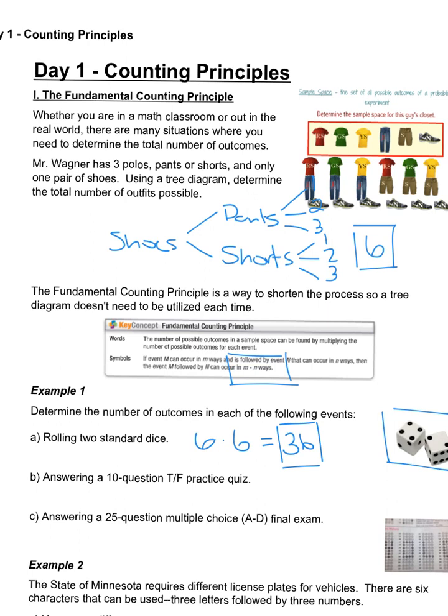All right, if I have a ten-question true-false quiz, I have true or false on the first, which is two options. Two options on the second, true or false. Two options on the third. Two options on the tenth. So when you're looking at this problem we have two options for ten questions, and what is 2 to the 10th? 1024.